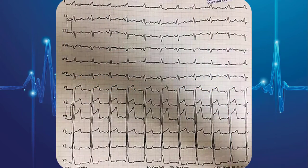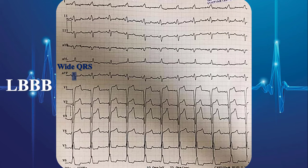This EKG demonstrates left bundle branch block. As you see, the complexes are wide owing to abnormal ventricular activation. There are discordant ST elevations in AVR and V1 to V4. Discordant ST depressions with T-wave inversions are present in lateral leads as well. As we explained, all these STT changes are due to wide QRS complexes.